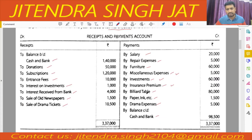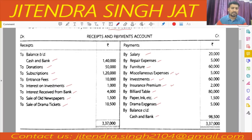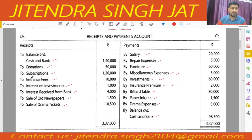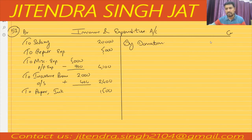Billiard table is an asset, paper ink etc. 1,500 — no adjustment, so paper ink 1,500. Drama expenses and children drama tickets are given and will be adjusted. Now let us start with the income side. Donations: donations are given 50,000, there is no adjustment in donations — by donations 50,000.